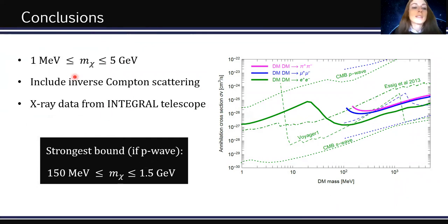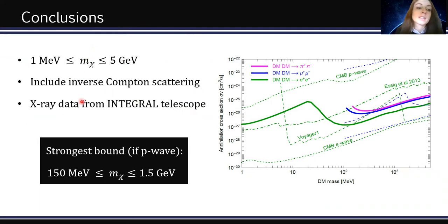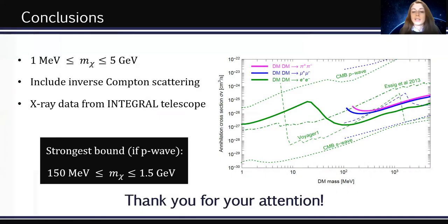To conclude: we focus on sub-GeV dark matter with masses between 1 MeV and 5 GeV, considering three annihilation channels — electron, muon, and pion. The key point of our analysis is including inverse Compton scattering between dark matter-origin electrons and positrons and the low-energy radiation fields in our galaxy. We compare our theoretical prediction for the dark matter flux with X-ray data from the INTEGRAL Space Telescope and derive our bounds. In particular, if dark matter annihilation is P-wave, we derive the strongest bounds currently in the literature for dark matter masses between 150 MeV and 1.5 GeV. Thank you for your attention, and special thanks to the organizers for this opportunity.